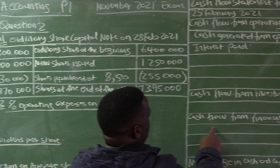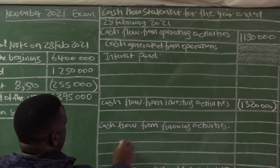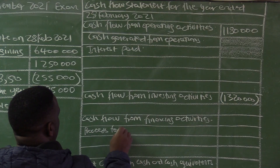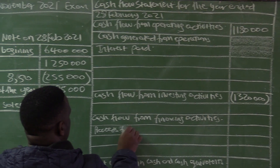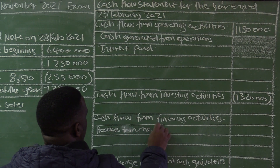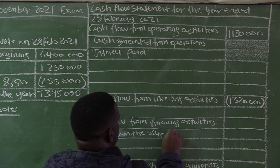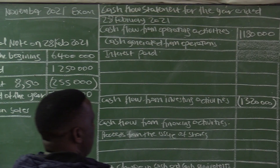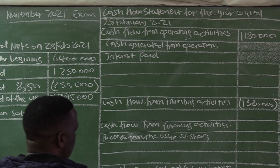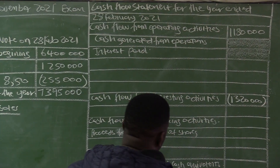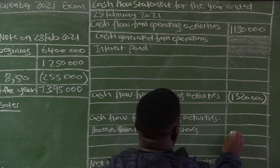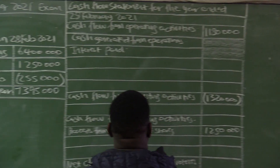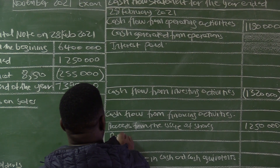This new shares issued amount of 1,250,000 is also needed in the cash flow statement under financing activities — proceeds from the issue of shares. Because the answer sheet is provided, it is advisable to record amounts before you forget. So proceeds from the issue of shares is 1,250,000. Then we also have the buyback of shares.